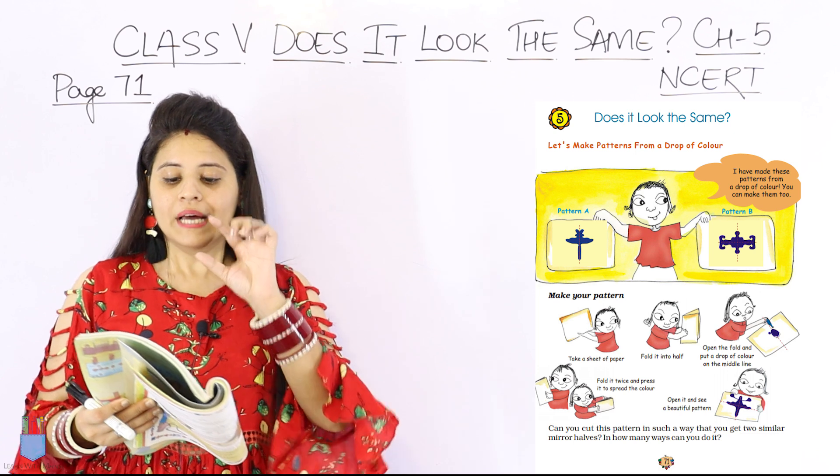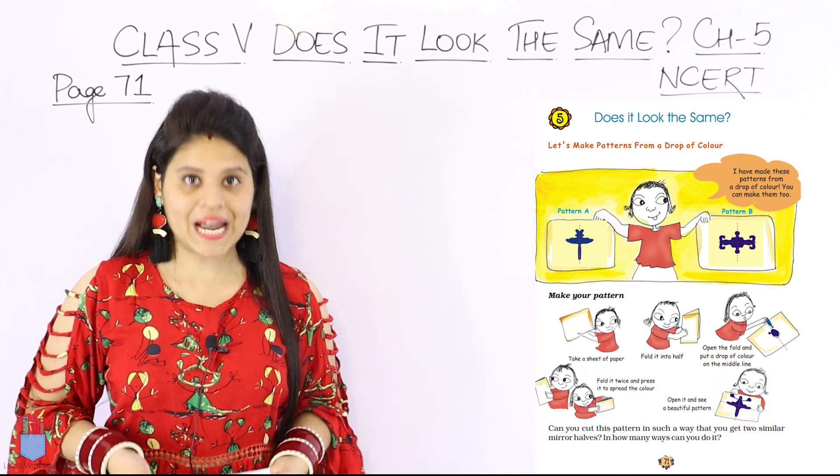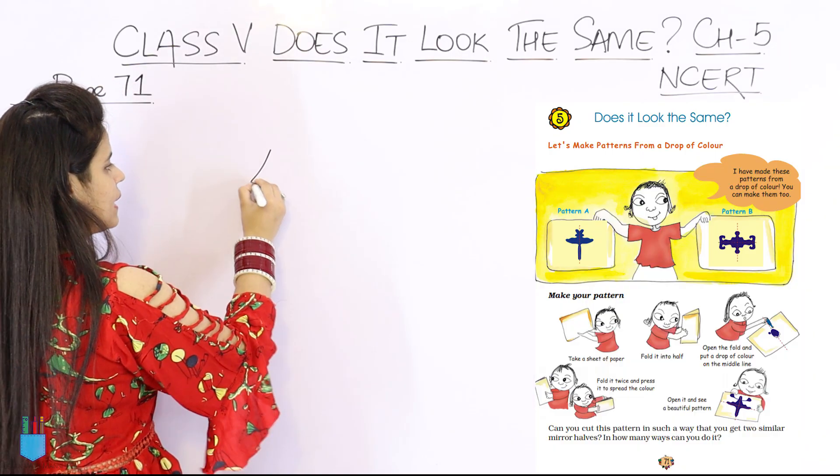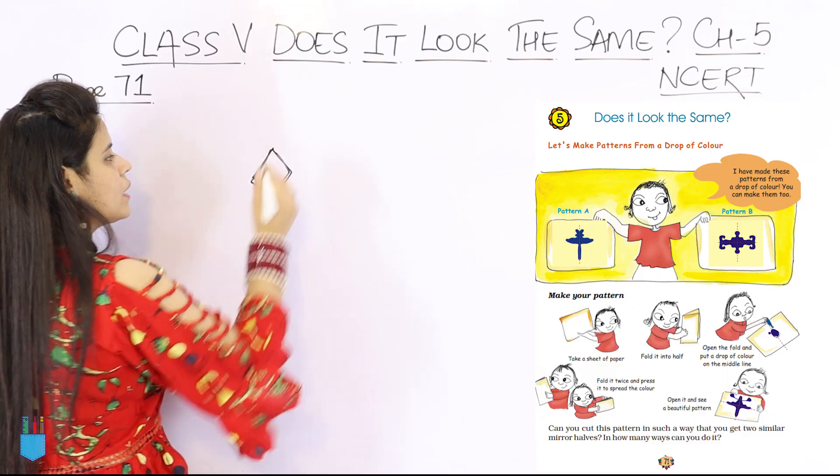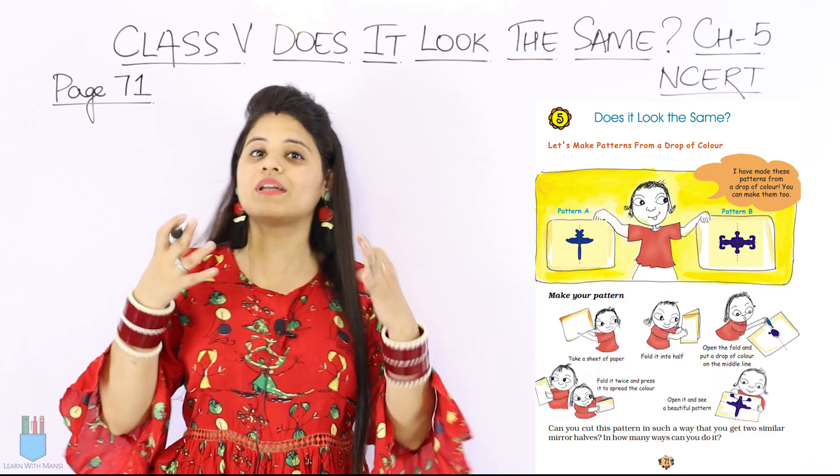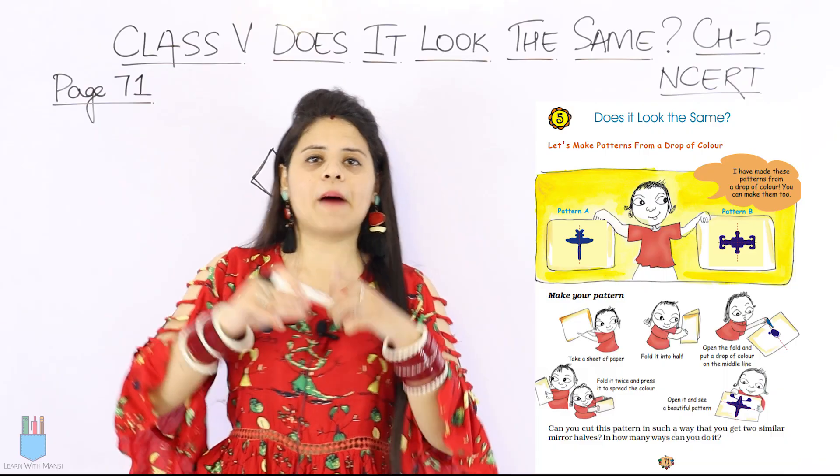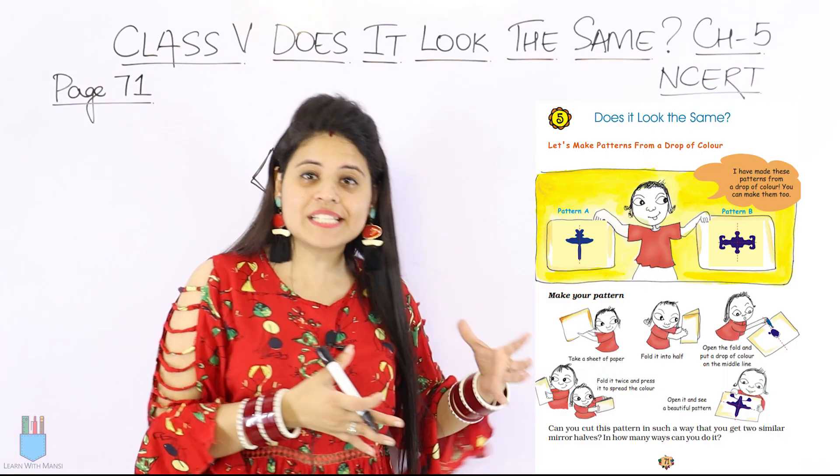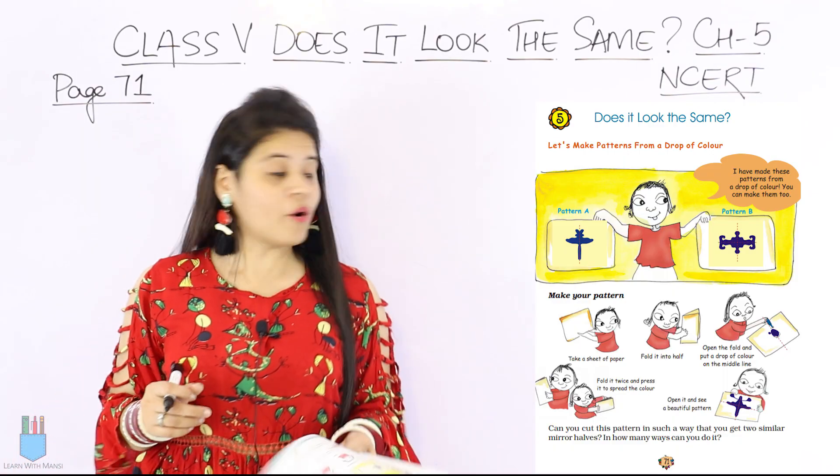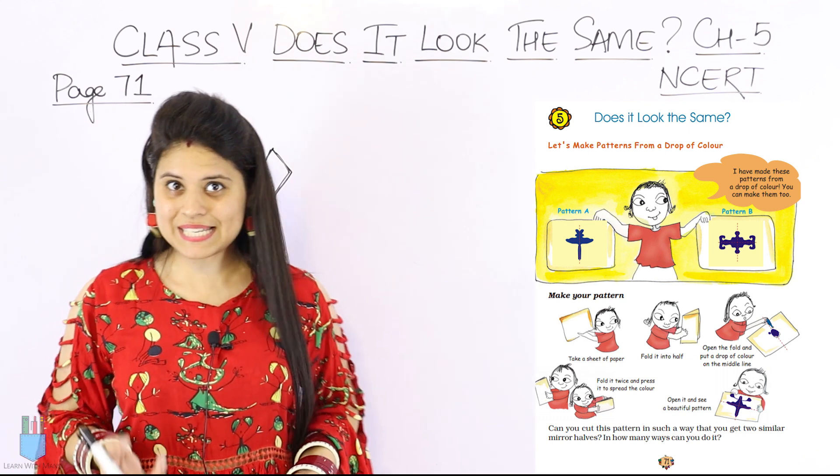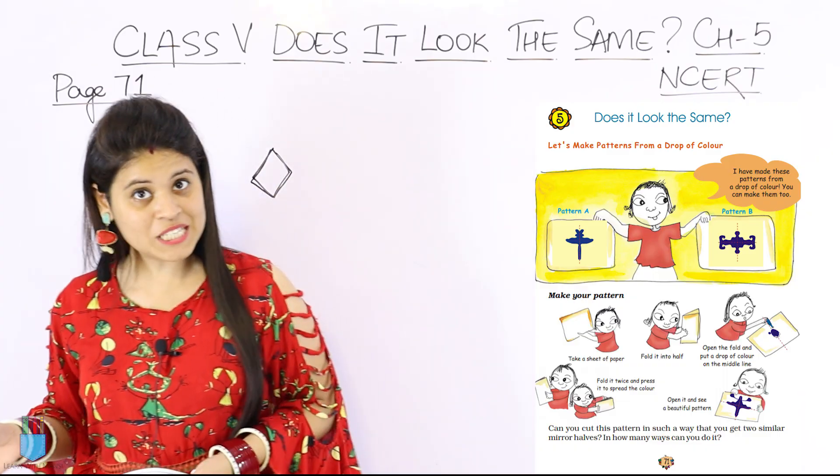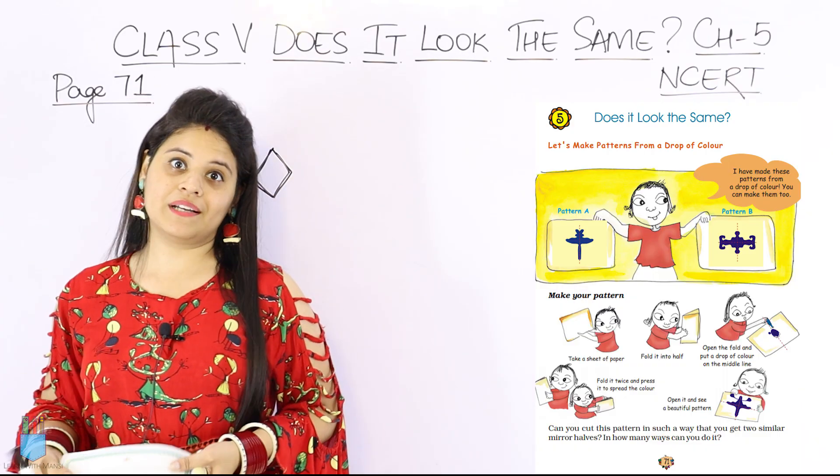First of all, you can see that a child is standing with two patterns in hand. What are patterns? Any shape, like I have made a shape like this, is also a pattern. You can look at my top here, this is also a pattern. You can see your curtains, bed sheets - in every place you will see patterns. The boy or girl has two images in hand, they are also a pattern, made using a drop of color.